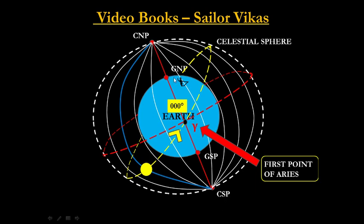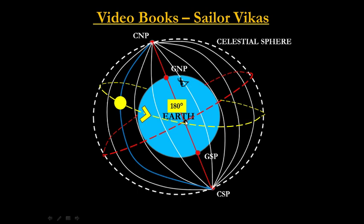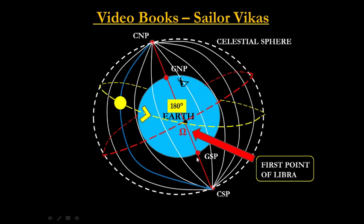The First Point of Aries is on the zero-degree celestial meridian. If I go exactly 180 degrees behind, there will be the First Point of Libra. From that point, the Sun is going from north to south. The First Point of Libra is the point on the surface of the celestial sphere where the Sun's path crosses the equinoctial from north to south. It is denoted by the omega symbol.